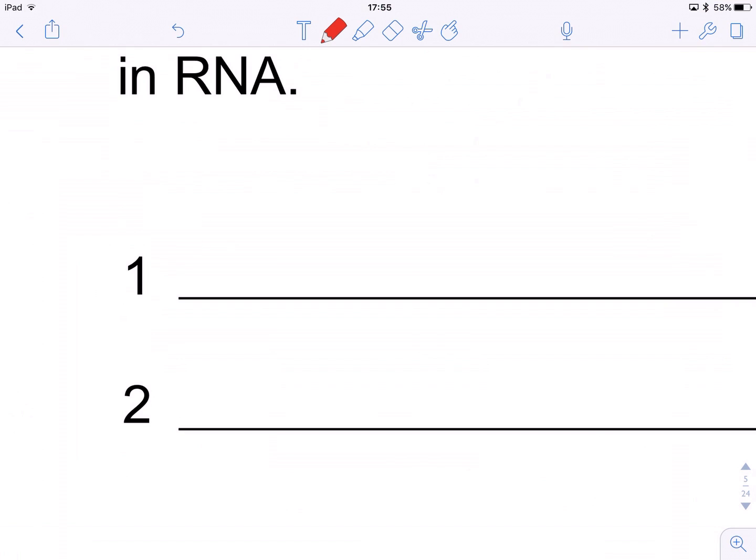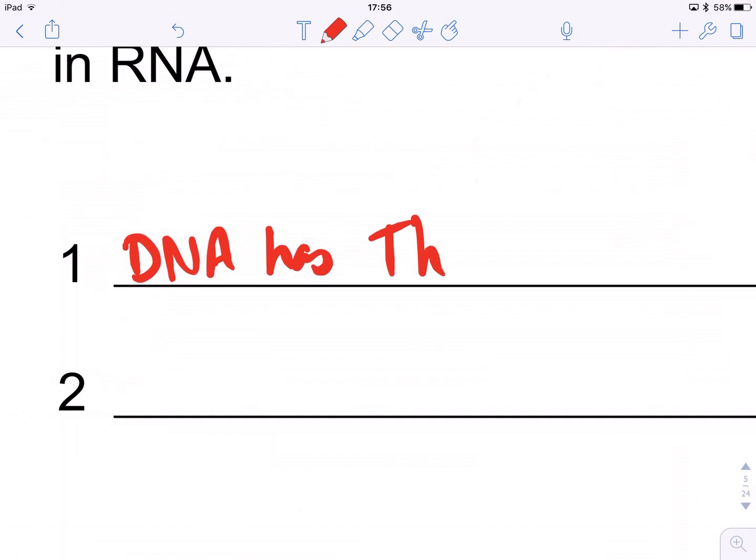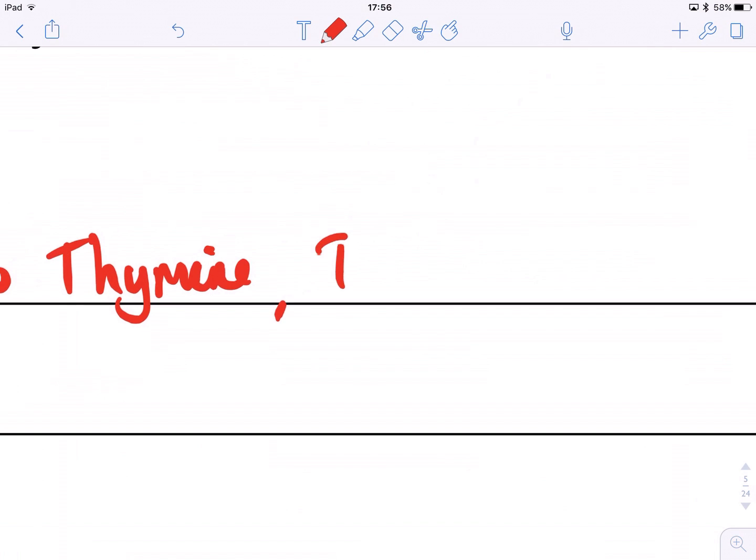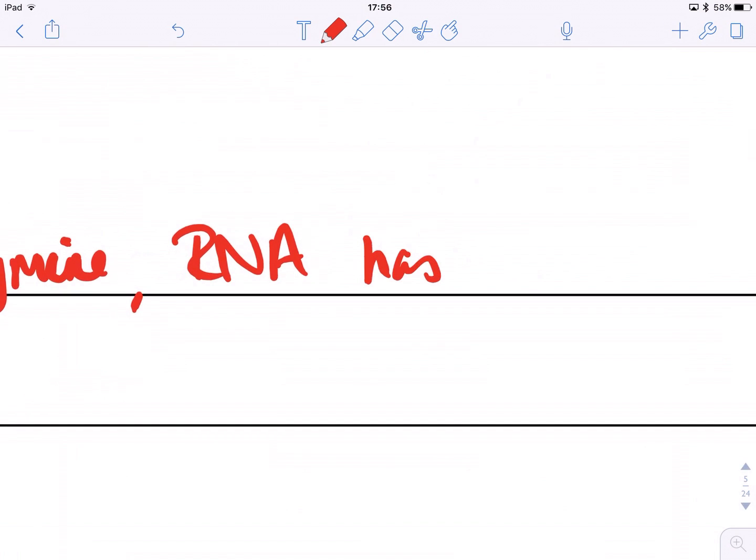The first one is going to be DNA has T, which is thymine. Whereas in RNA, the thymine is replaced by U, which is uracil. There we go.